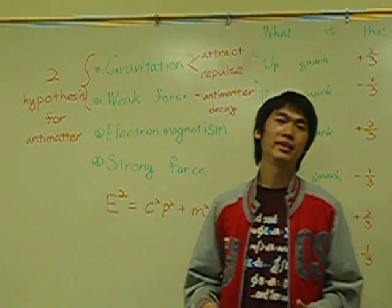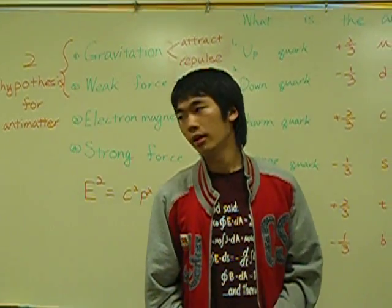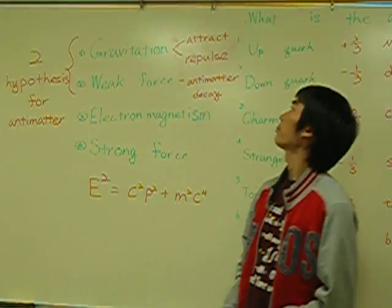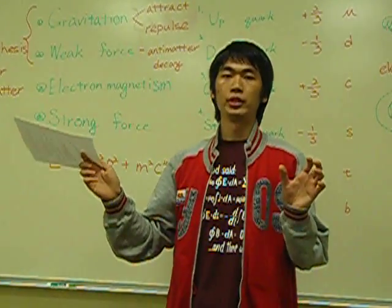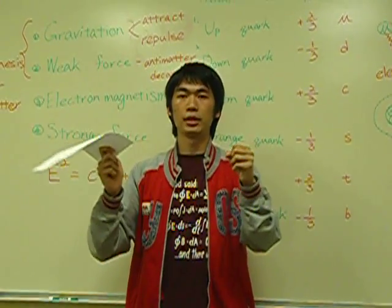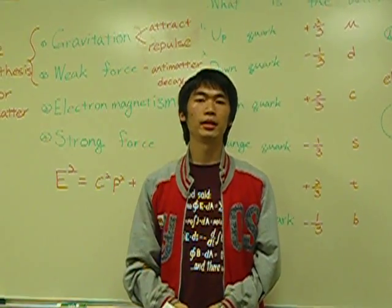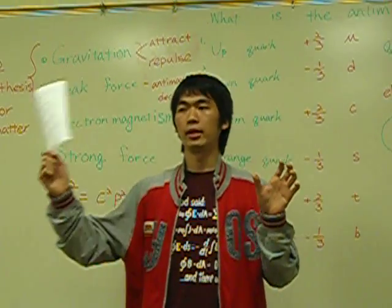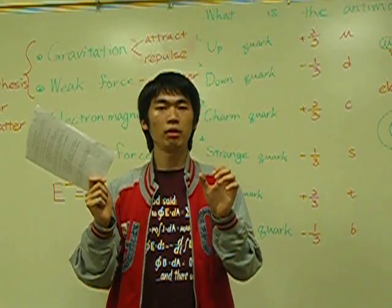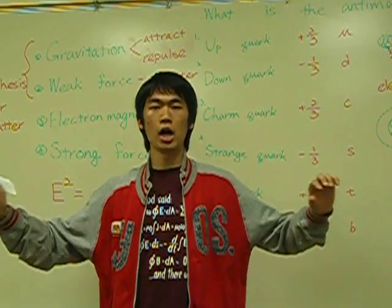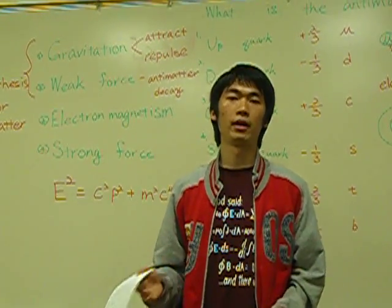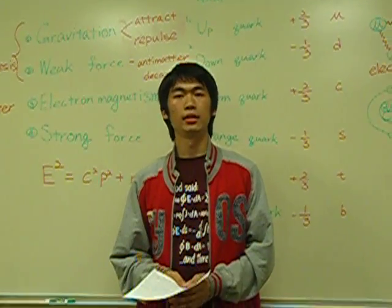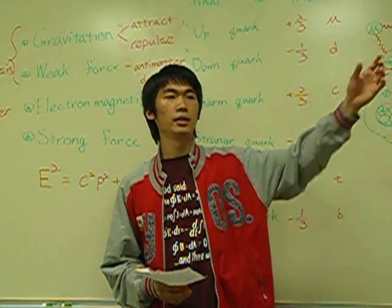Where is the antimatter? How come we cannot find any antimatter in our life? There are two hypotheses. The first one is gravitation. Matter and matter have a force called gravitation that attracts them together. The same thing happens with antimatter — gravitation attracts antimatter together. However, antimatter and matter cannot attract each other; the gravitation is inverse, so they repel each other and become farther and farther apart. That's why in our world everything is matter, and the antimatter should be very far away on the other side of space.